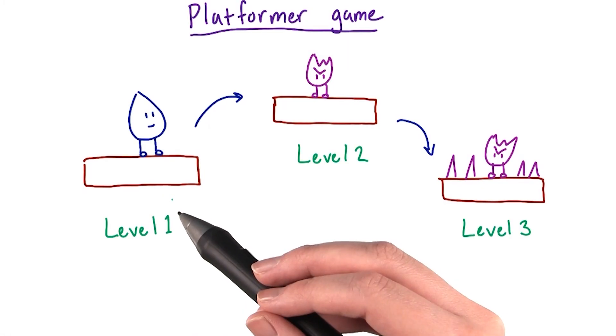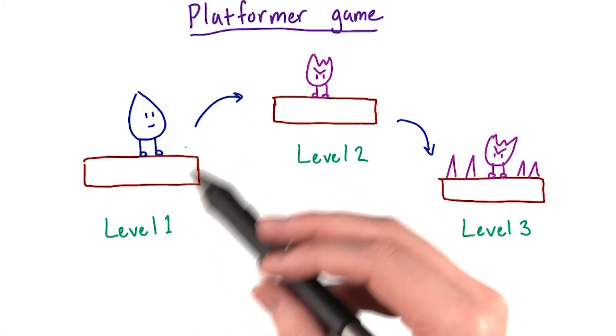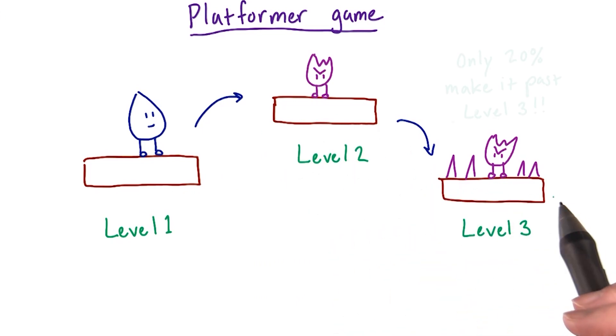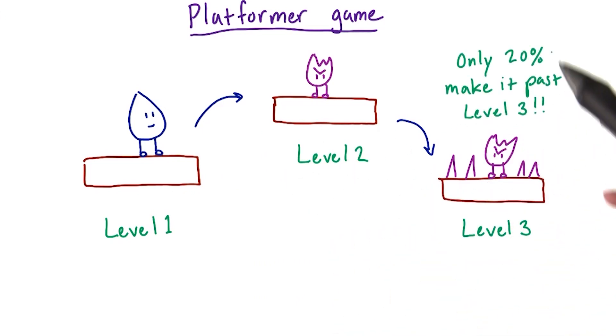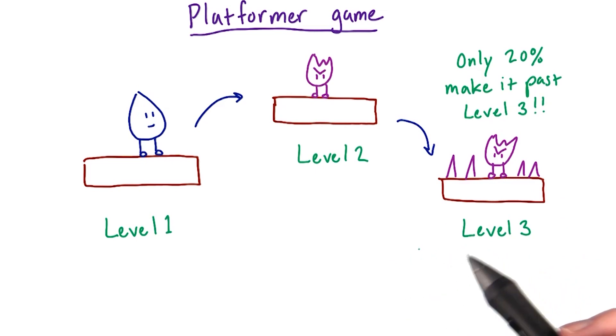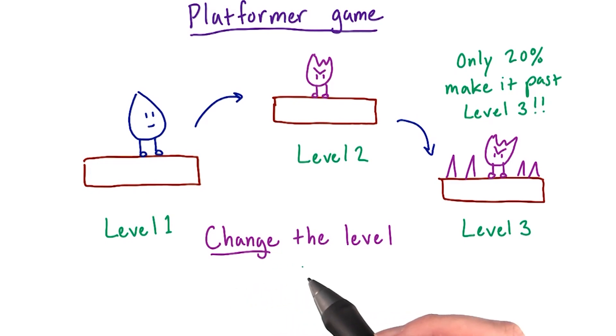Let's walk through an example of creating effective A-B testing scenarios. Let's say we've made a platformer game, where we jump around and shoot enemies to advance levels. Our analytics have shown us that only 20% of players make it past level three. We think that the level might be too hard, so let's change it.